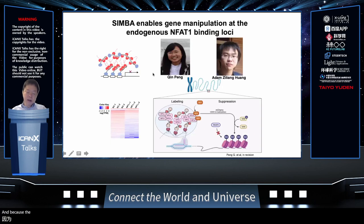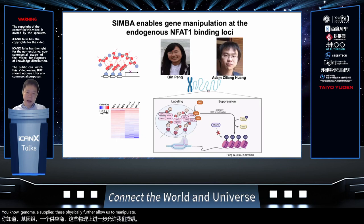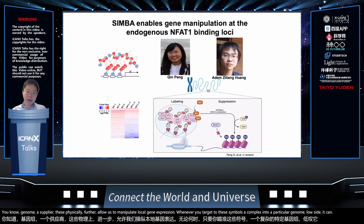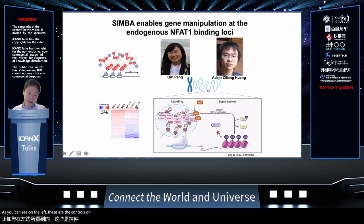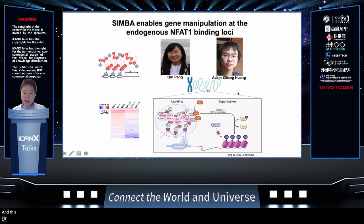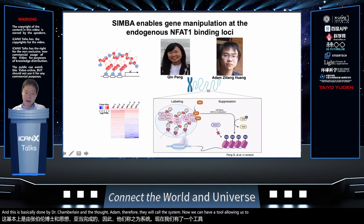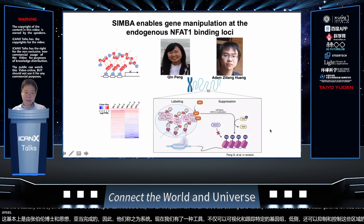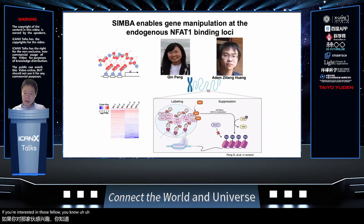Because HP1-alpha acts as a genome suppressor, this allows us to manipulate local gene expression. Whenever we target this condensate complex to a particular genome locus, it can suppress genes in the neighboring area — verified using RNA-seq. We now have a tool not only to visualize and track particular genome loci, but also to suppress and control gene expression in these areas. We are very happy to collaborate with anyone interested in such genome visualization or control tasks.